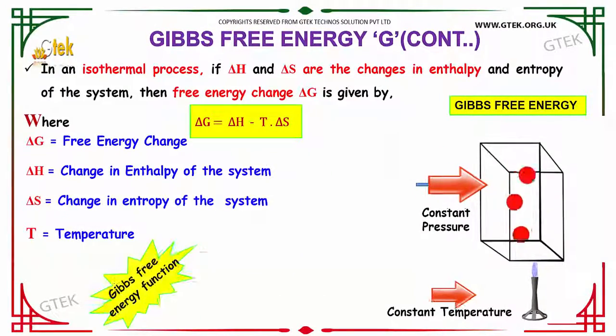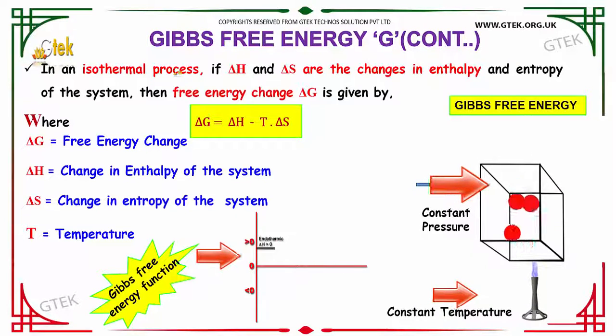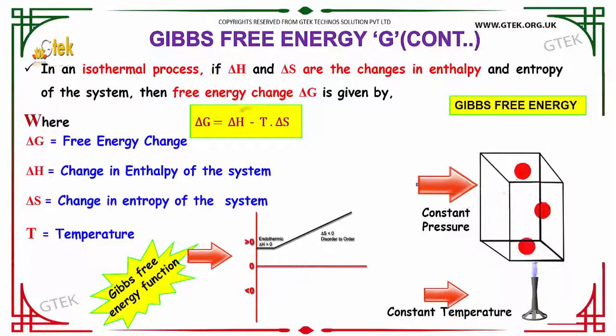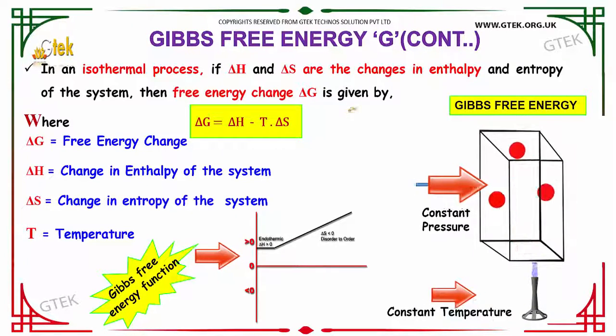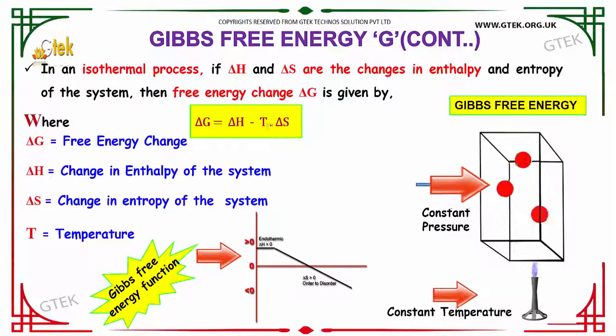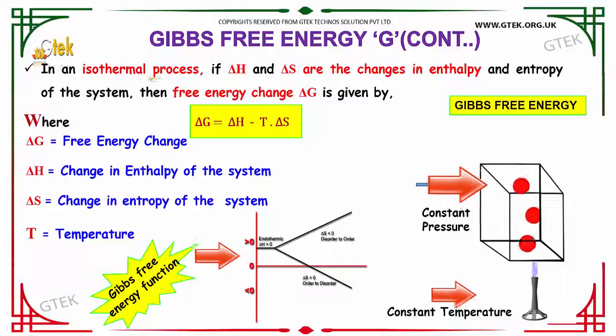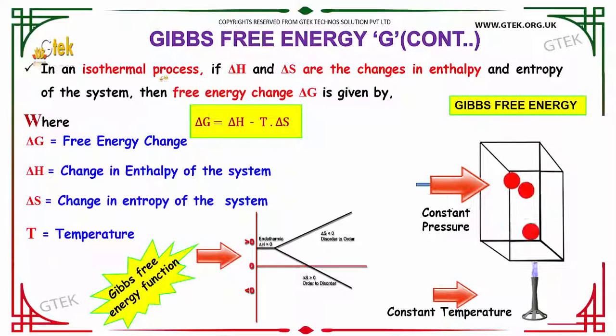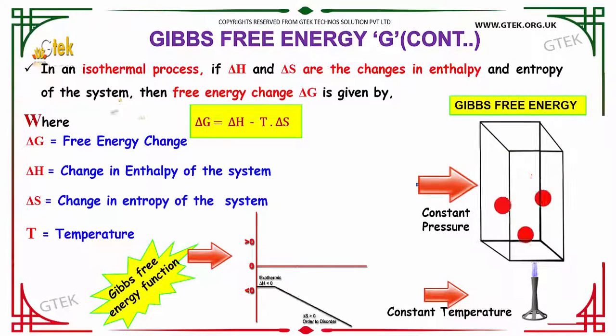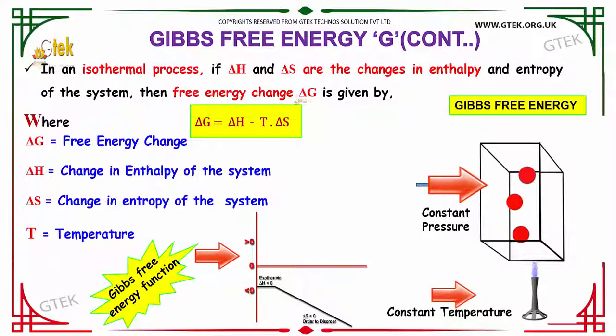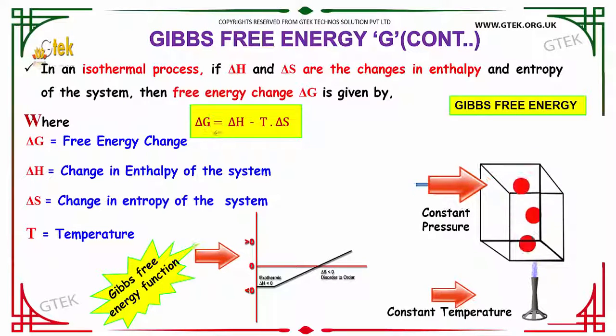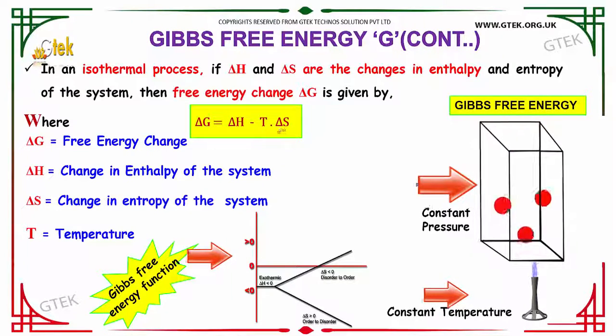In an isothermal process, if delta H and delta S are the changes in enthalpy at constant temperature, the free energy change delta G is given by delta G equals delta H minus T times delta S.